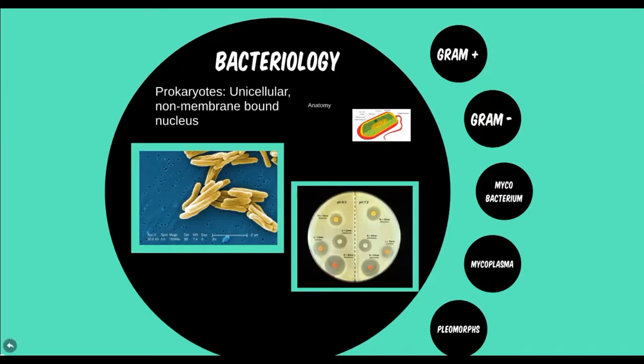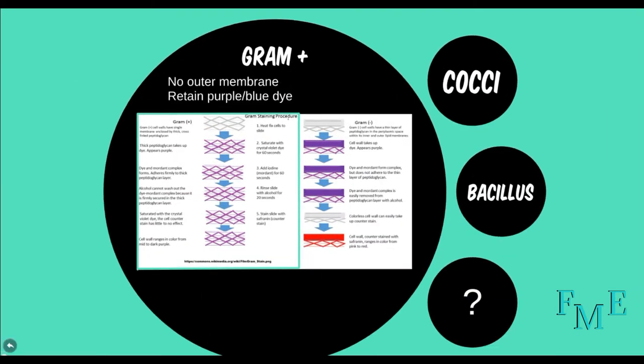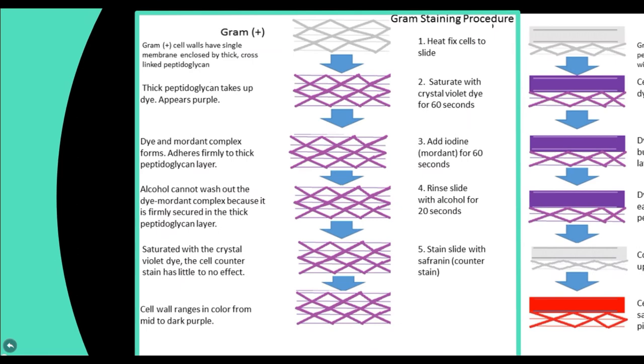In this video we will continue the discussion on gram-positive bacteria, specifically looking at the gram-positive cocci or circular shaped bacteria. Within the gram-positive cocci there are a few important genus and species to discuss. Remember these bacteria will stain purple.